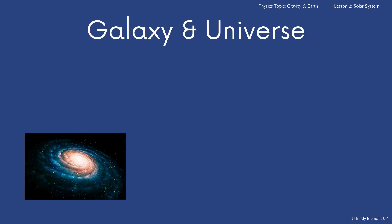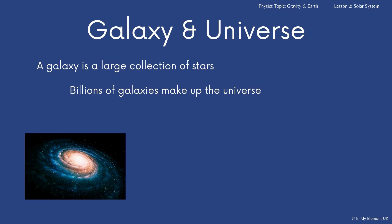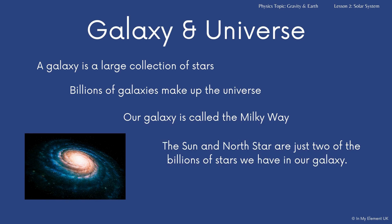You need to understand the difference between what a galaxy is and what the universe is. Very simply, the galaxy is a huge, large collection of stars, and then there are billions of galaxies that make up the universe. We are part of just one galaxy, and our galaxy is known as the Milky Way. The sun and the north star are just two of the stars that we have in our galaxy — the ones that we would commonly talk about. So, galaxy is the collection of stars; the universe is a collection of those galaxies.